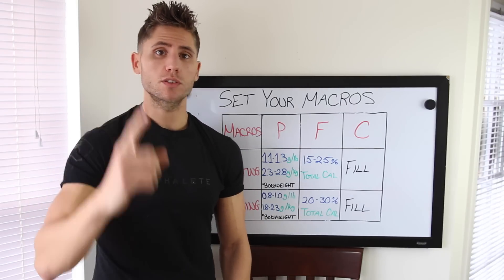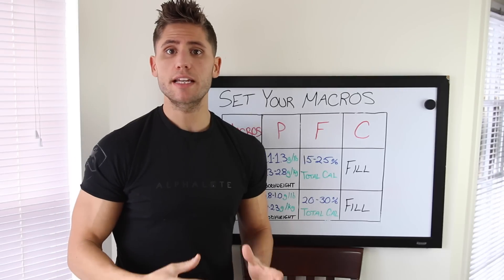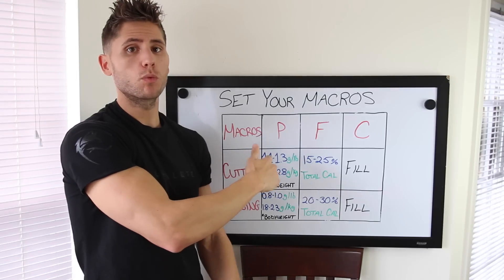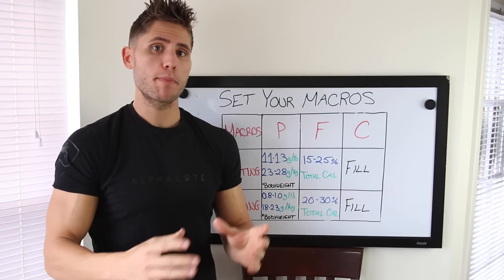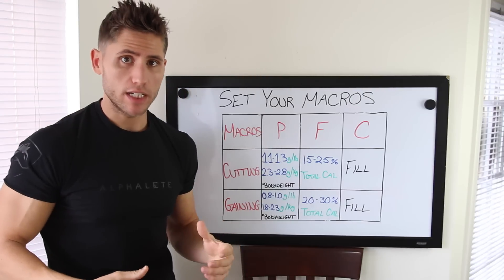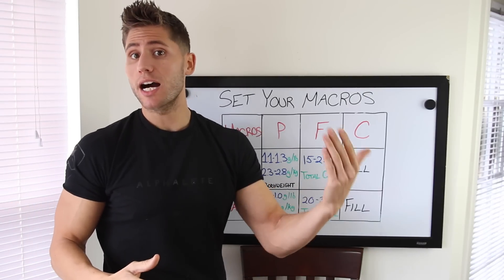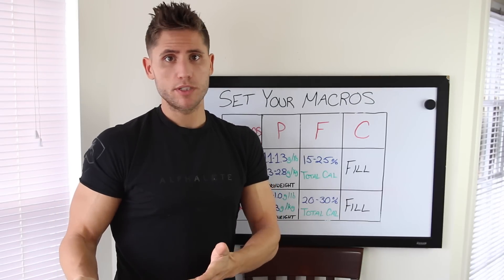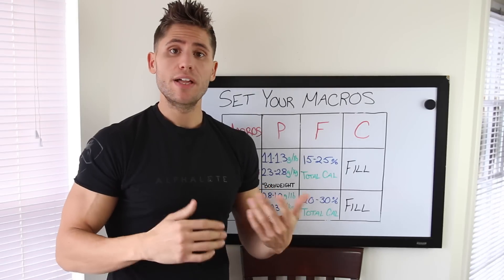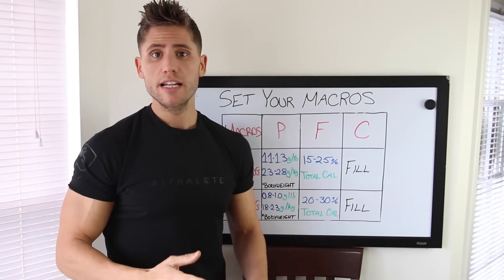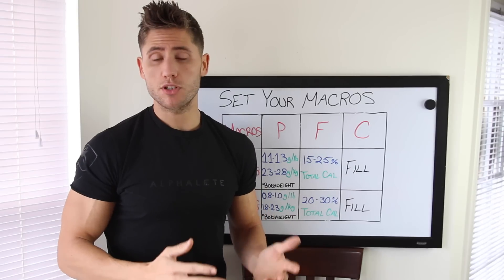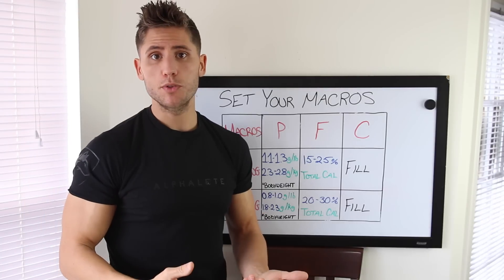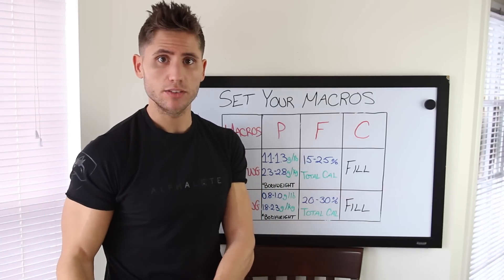First things first: no matter whether you're cutting or bulking, you usually set your protein intake first. We're going to go with 1.1 to 1.3 grams per pound of body weight per day in a cutting phase. Some people are used to the one gram per pound rule — if you're 200 pounds, 200 grams of protein a day. The reason the numbers are a bit higher here is because when you're in a deficit you're trying to preserve as much lean body mass as possible, so keeping protein a little higher can help with that.